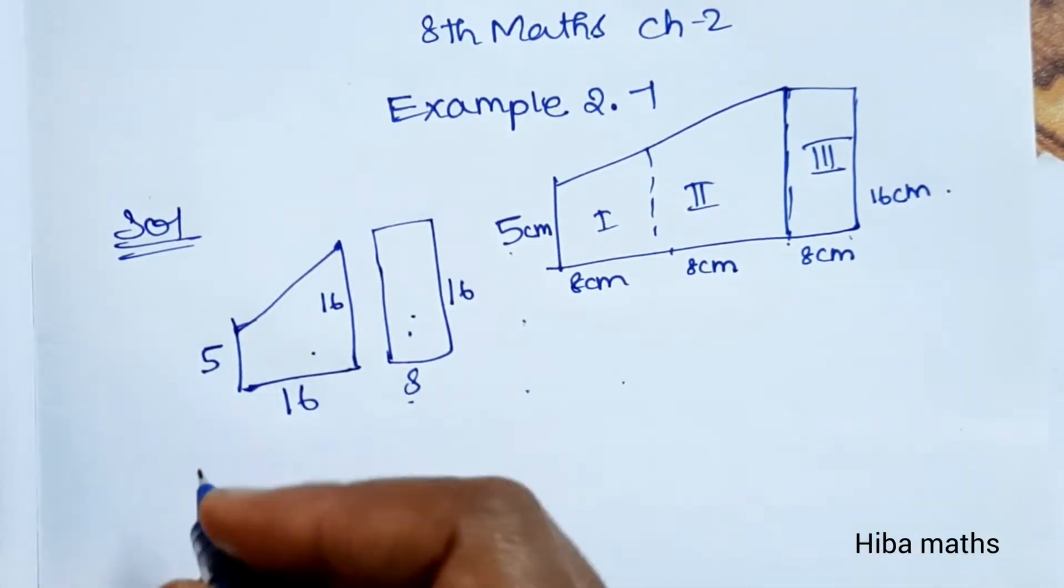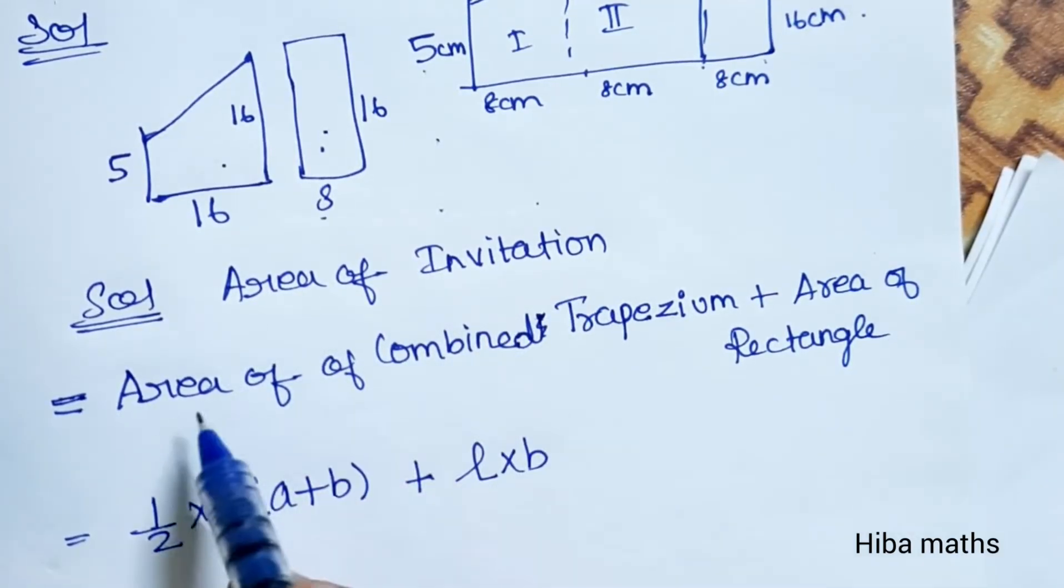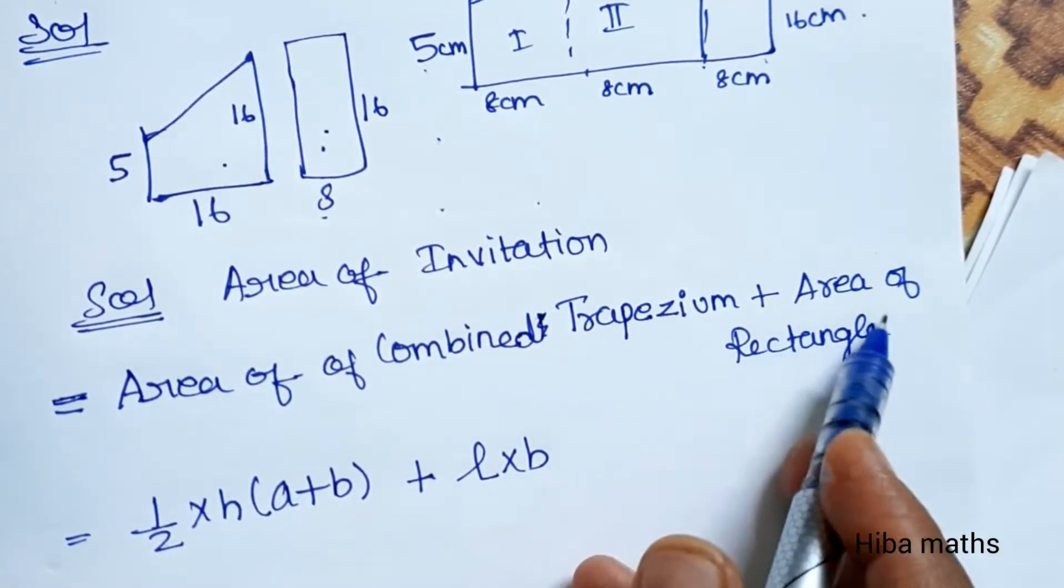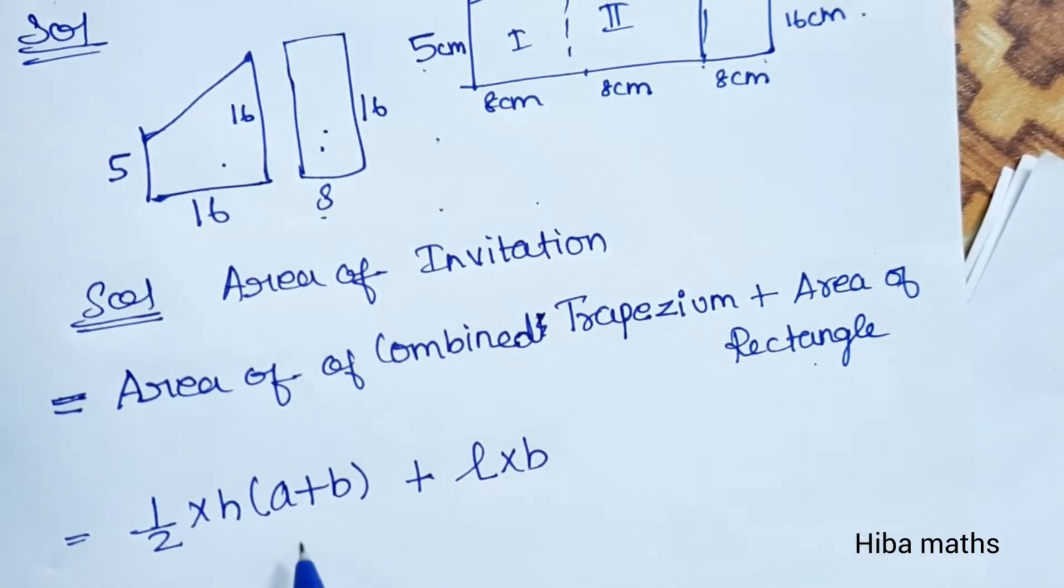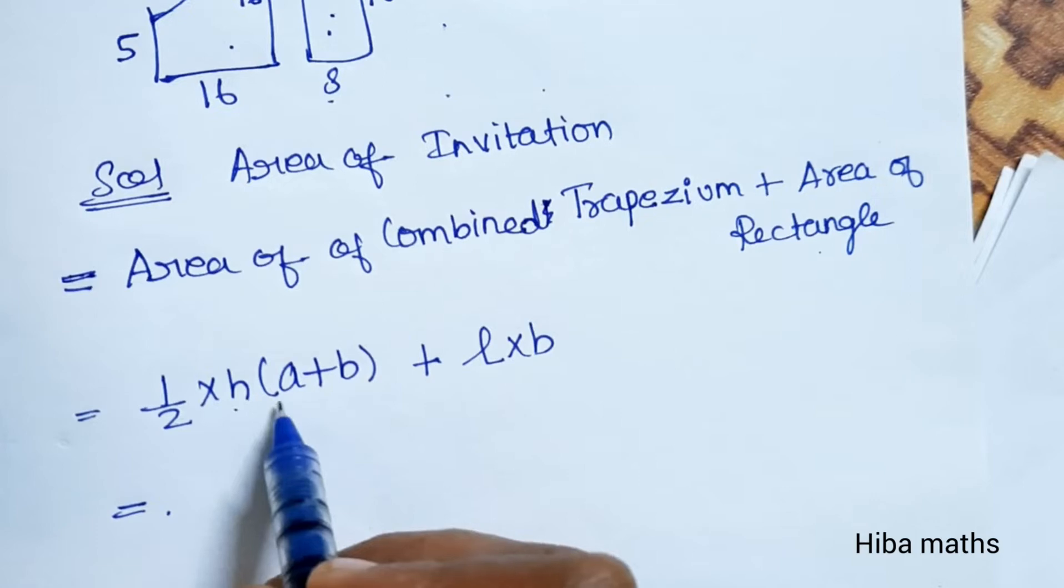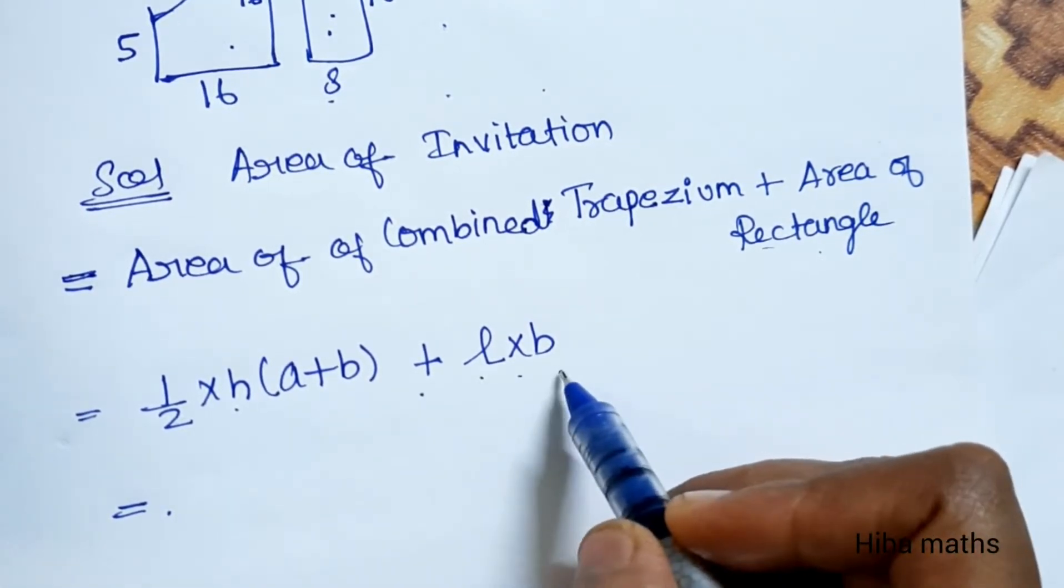The area of invitation equals area of combined trapezium plus area of rectangle. The area of trapezium formula is half into H into A plus B, plus area of rectangle is L into B.